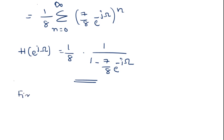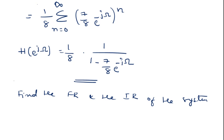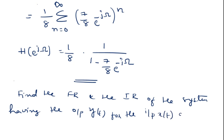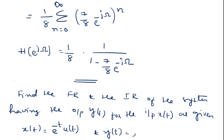Next problem: find the frequency response and the impulse response H of the system having the output y(t) for the input x(t), where x(t) = e^(−t) u(t) and y(t) = e^(−2t) u(t) + e^(−3t) u(t).